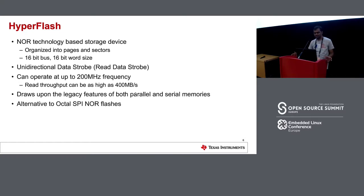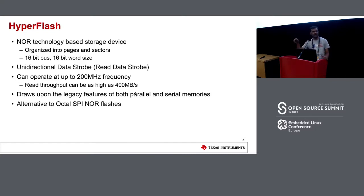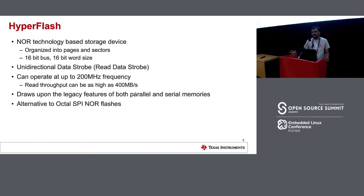The word size is also 16-bit. HyperFlash only uses the data strobe for reading — only HyperFlash is able to toggle the data strobe line, and it doesn't expect the host to toggle the data strobe line when writing data to the flash. It works at least at 200 MHz frequency, so you can get a read throughput of about 400 megabytes per second because you are transferring two bytes per clock.